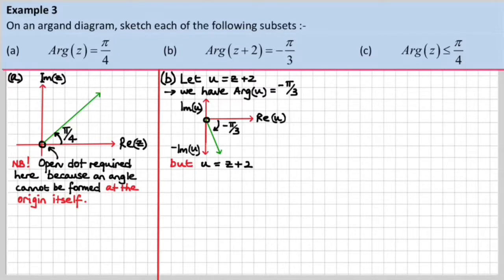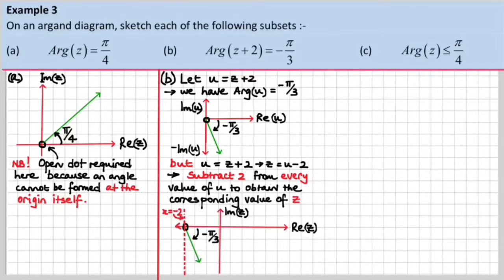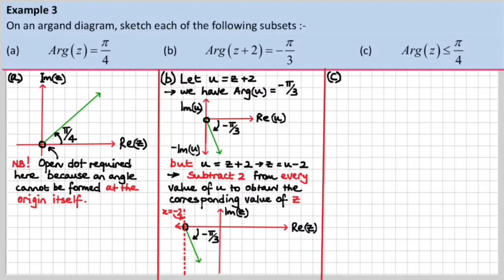We know that u, according to our definition, is z plus 2, therefore z would be u minus 2. In other words, we have to subtract 2 from every value of u to obtain the corresponding value of z. So everything's going to have to move backwards by two units, and there it is. And of course, this red dotted line here is x equals minus 2. Pretty marvellous, isn't it? Let's move on.